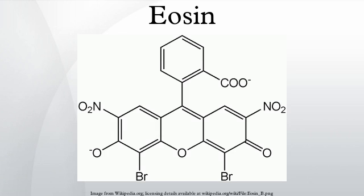Variants: there are actually two very closely related compounds commonly referred to as eosin. Most often used is eosin Y, which has a very slightly yellowish cast. The other eosin compound is eosin B, which has a very faint bluish cast. The two dyes are interchangeable, and the use of one or the other is a matter of preference and tradition. Eosin Y is a tetrabromo derivative of fluorescine; eosin B is a dibromodinitro derivative of fluorescine.